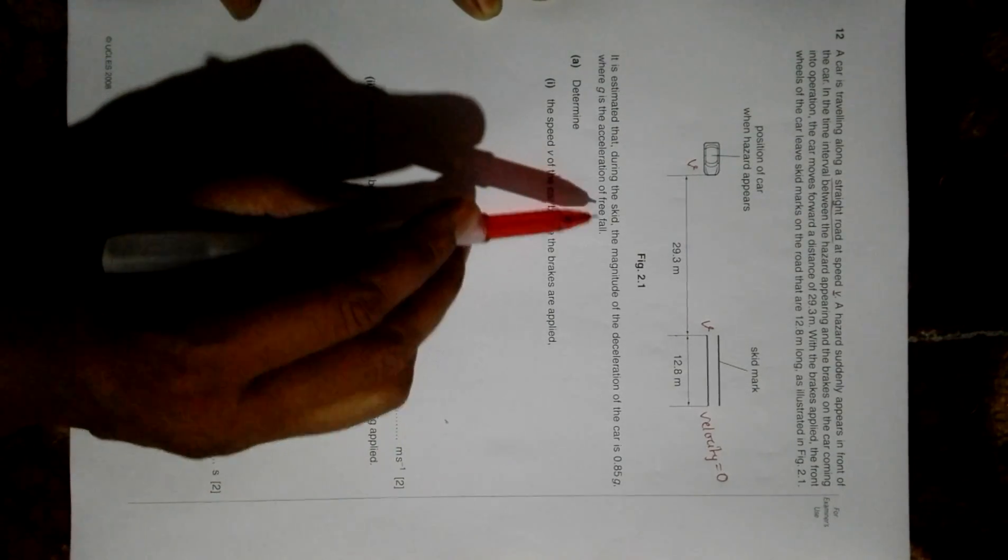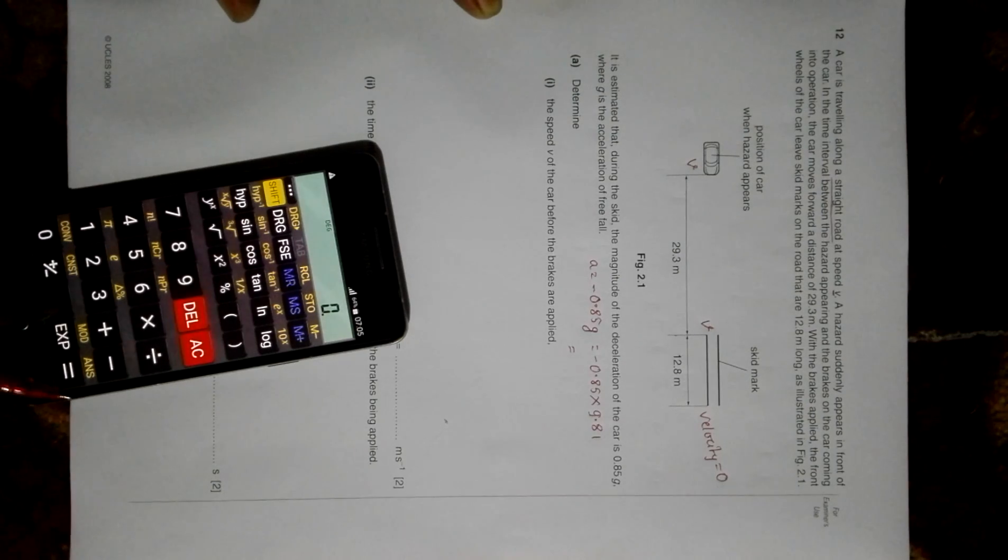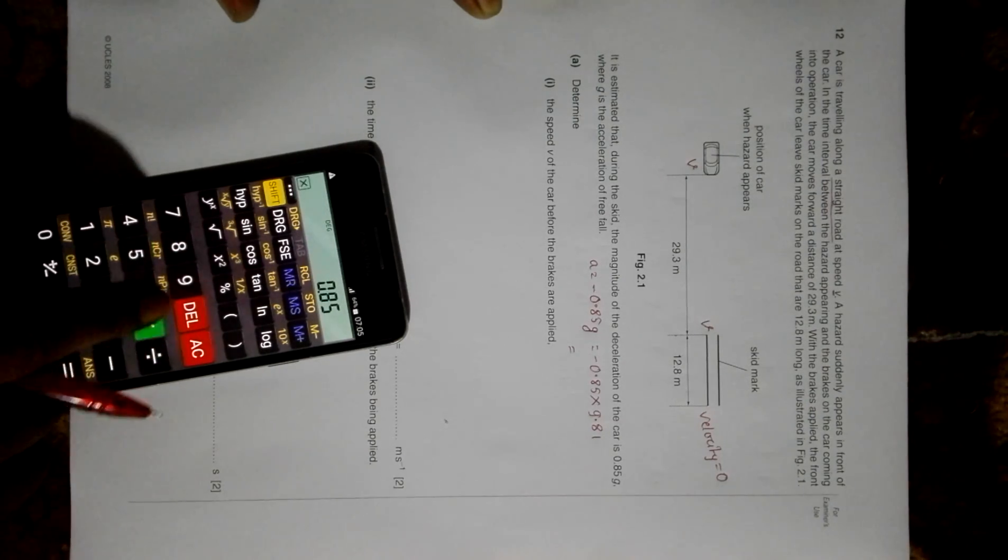From here to here, the body retards or undergoes deceleration. It's estimated that during the skid, the deceleration of the car is 0.85G. So the acceleration is equal to minus 0.85 into G, which equals minus 0.85 into 9.81. The value of acceleration will be 8.3385 meters per second squared.